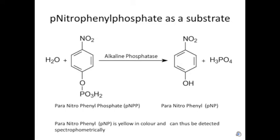What we are going to use as a substrate for this enzyme is nitrophenyl phosphate, from which alkaline phosphatase can remove a phosphate to form paranitrophenyl. Paranitrophenyl is a yellow color and therefore we can measure its absorbance in a spectrophotometer, allowing us to measure the rate of the reaction.